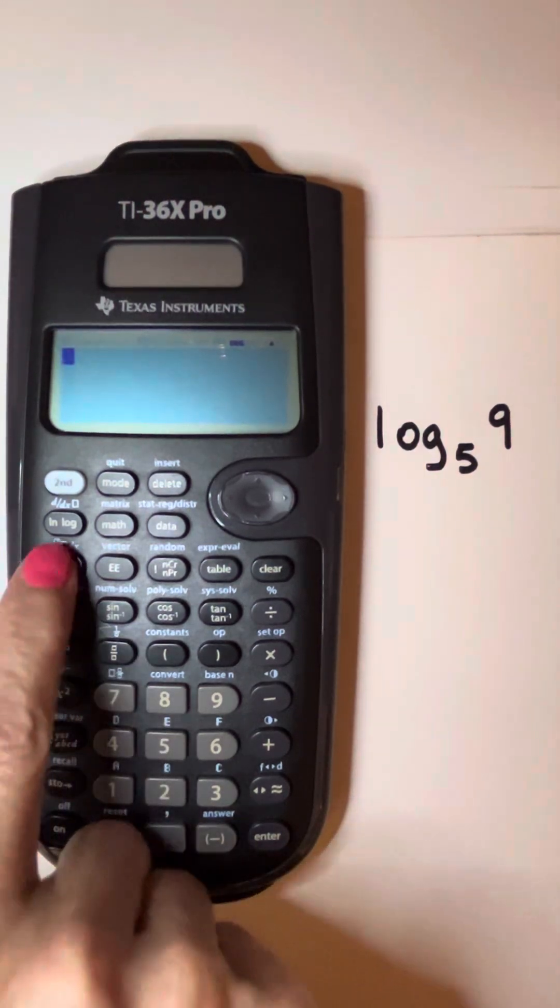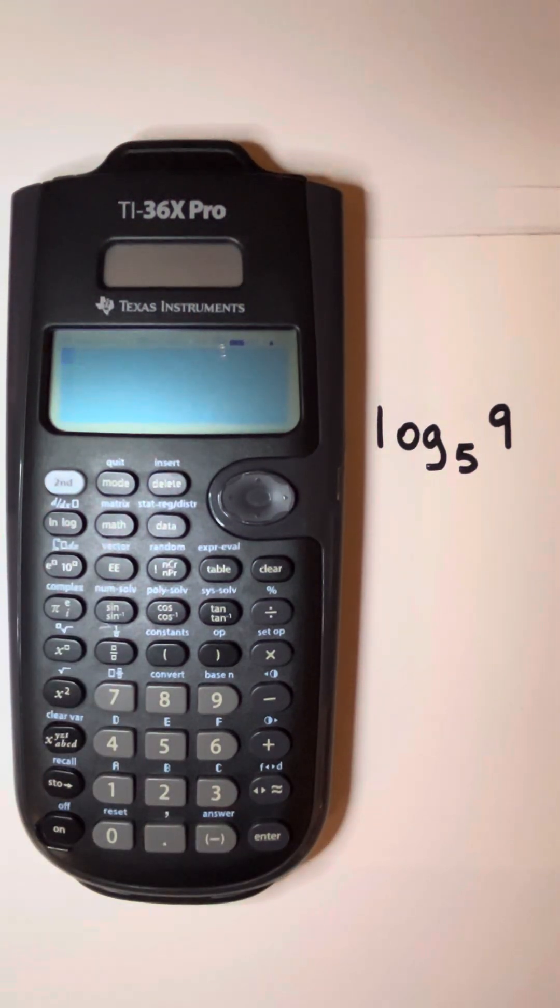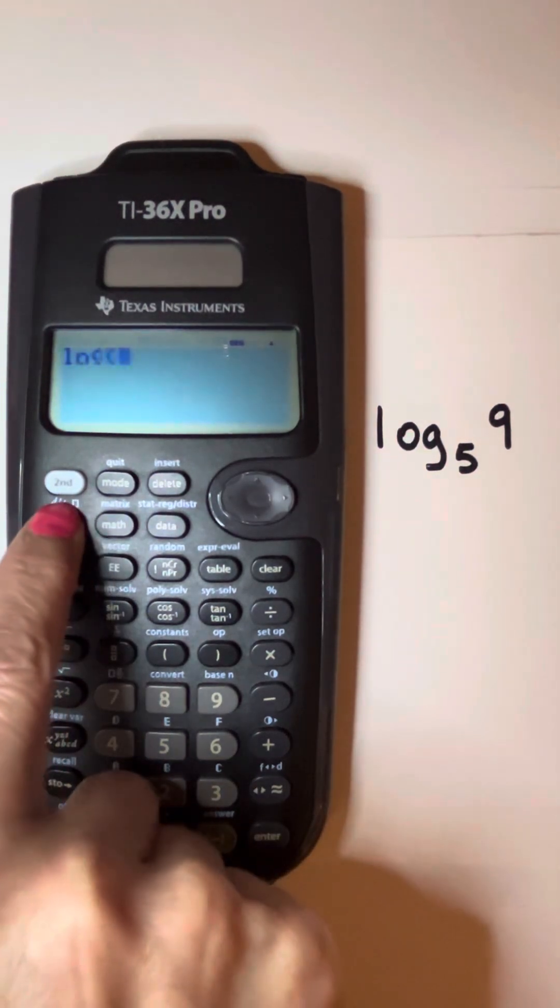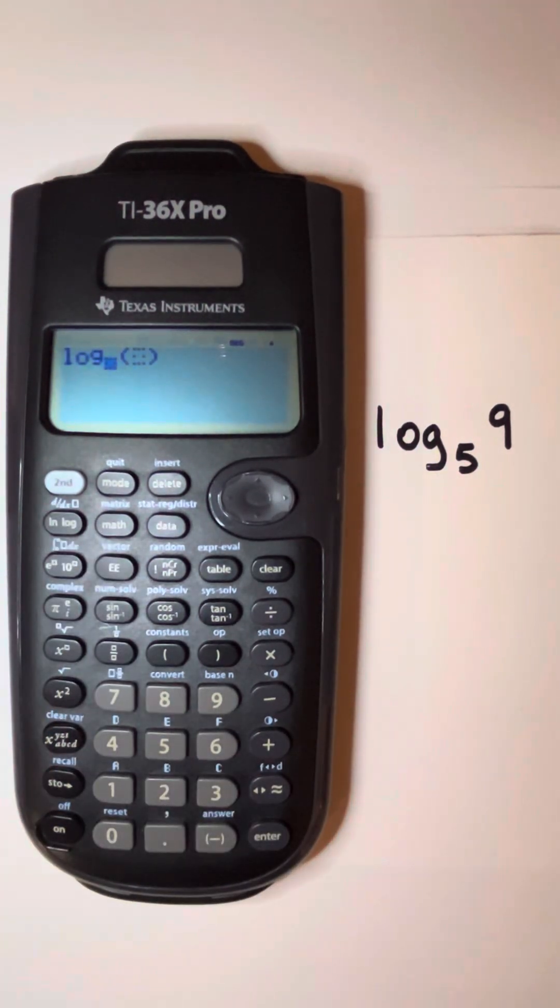It doesn't show it on the key, on the button, but that same natural log and log button, if you press it three times, one, two, three, this is where you can put in any logarithm with any base.